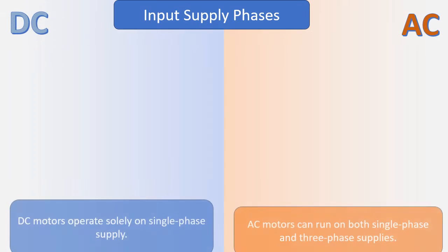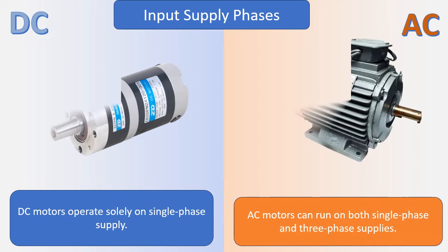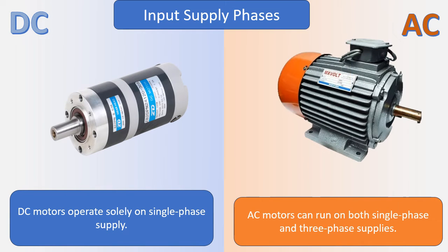Input supply phases: AC motors can run on both single phase and three phase supplies, while DC motors operate solely on a single phase supply.